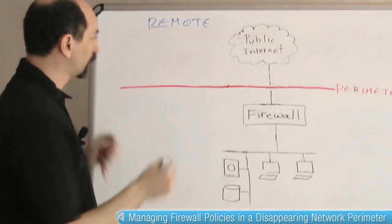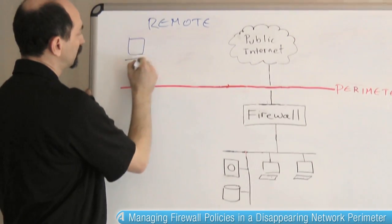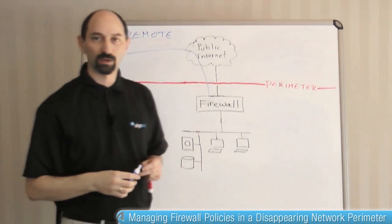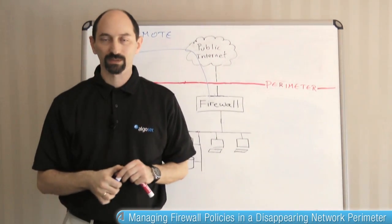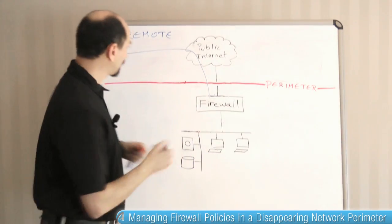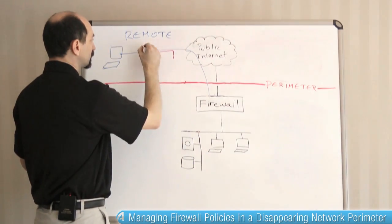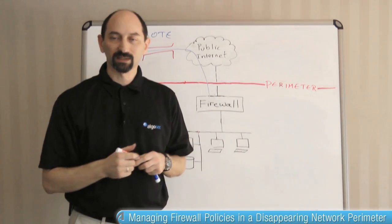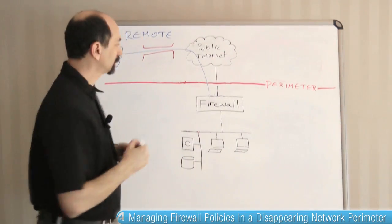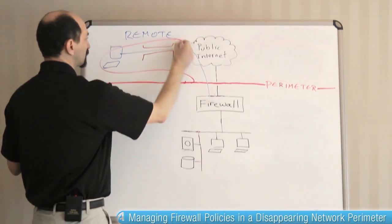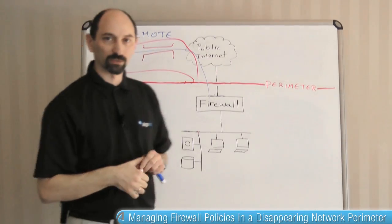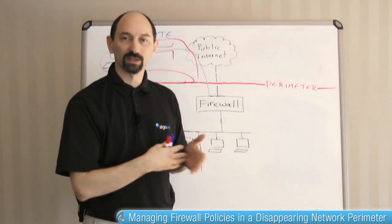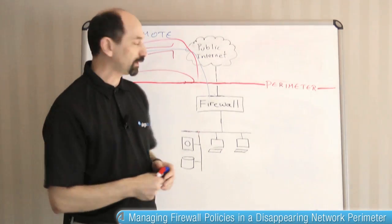We have people working out of their home offices or from their hotel rooms on the road, and they're connecting to the network to use internal resources — typically over a VPN connection. But this means that now our network perimeter starts to look different. We have to control and filter traffic to that segment of the network even though it's not strictly inside our network offices.